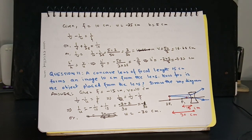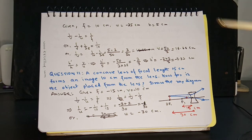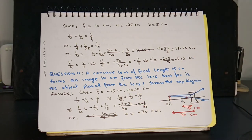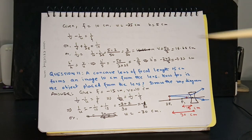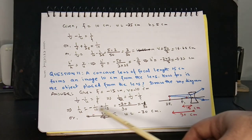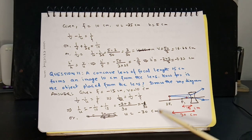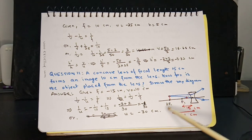Question 11: A concave lens of focal length 15 cm forms an image 10 cm from the lens. How far is the object from the lens? Here f = −15 cm (concave lens). Using the lens formula, 1/u = 1/v − 1/f = 1/10 − 1/(−15), giving u = −30 cm. So the object is placed at twice the focal length from the lens.